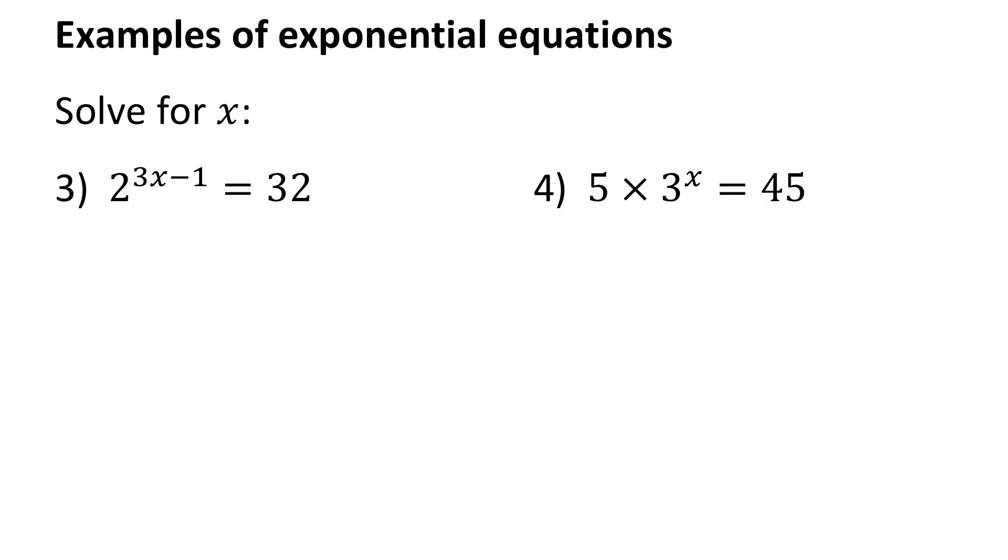In the next two questions, I'm still trying to find out the value of x that will make the equations true. They look more complicated, but I'm going to use the same strategy. Now 32 is 2 to the power of 5. Since I have the same bases, I'm going to make my exponents equal. 3x minus 1 equals 5. I'll add 1 to both sides to get 6, and divide both sides by 3. Therefore, x is 2.